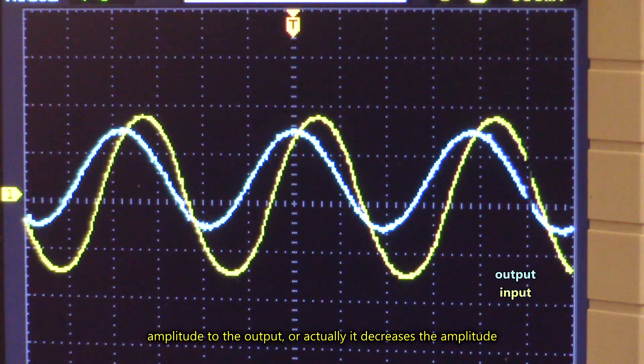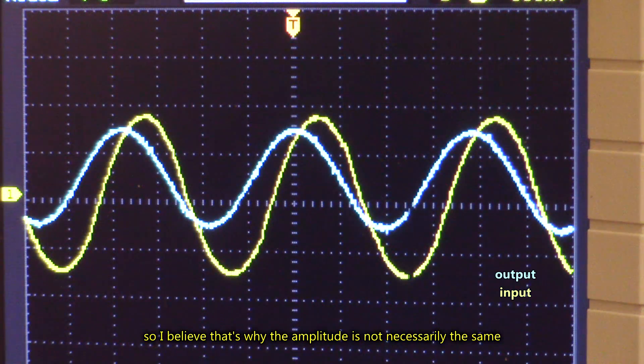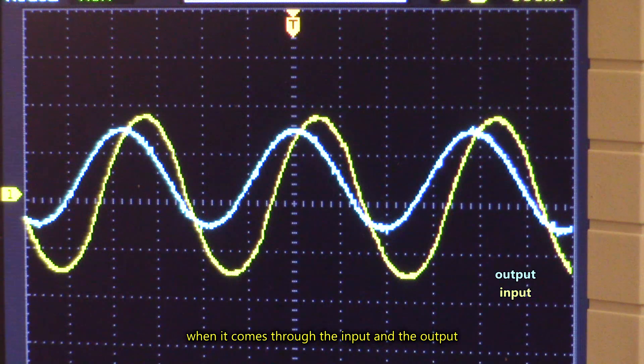Or actually, it decreases the amplitude to the output, because it's inversely proportional to it. So I believe that's why the amplitude is not necessarily the same when it comes through the input and the output.